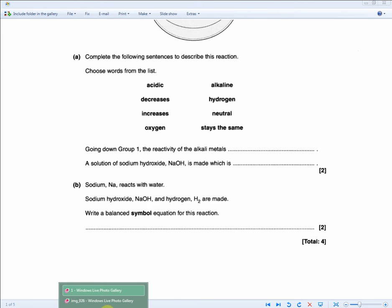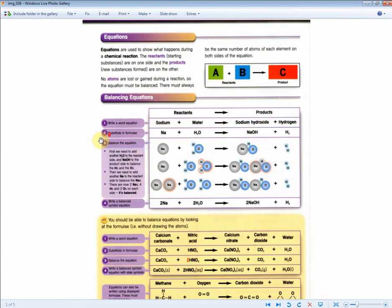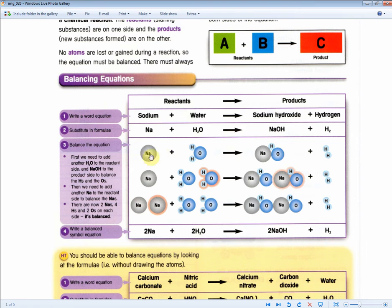If we turn to the revision guide for some help, the area you should be recalling is here under balancing equations. If we zoom in, we can see the very example given is what you're being asked about in the exam question. It says sodium plus water equals sodium hydroxide plus hydrogen. But as they're asking for the symbol equation, what you need to recall is step 4, where it gives you the balanced symbol equation. For the two marks, all you need to do is write this step 4 as it is.